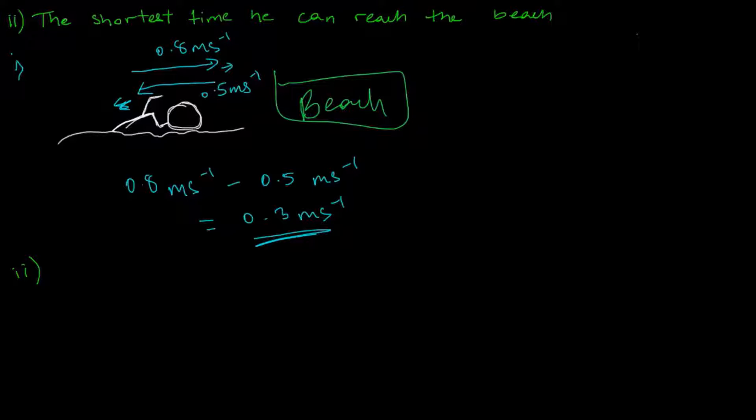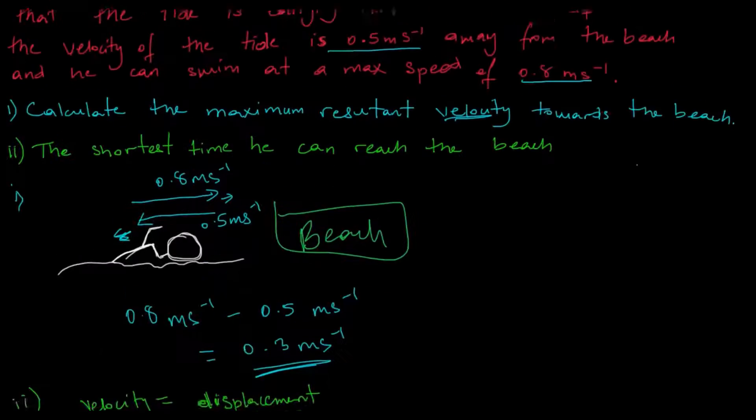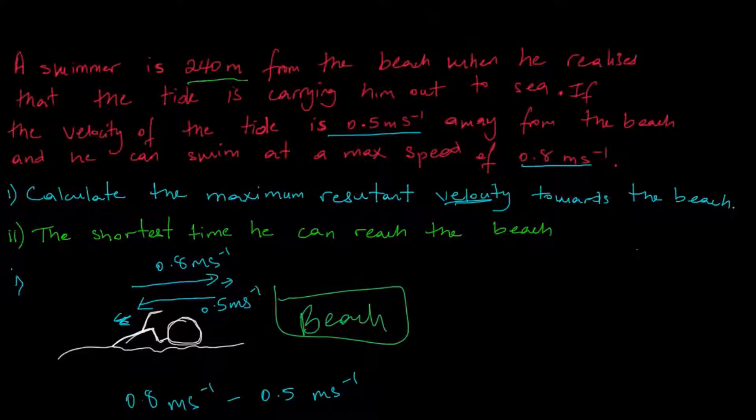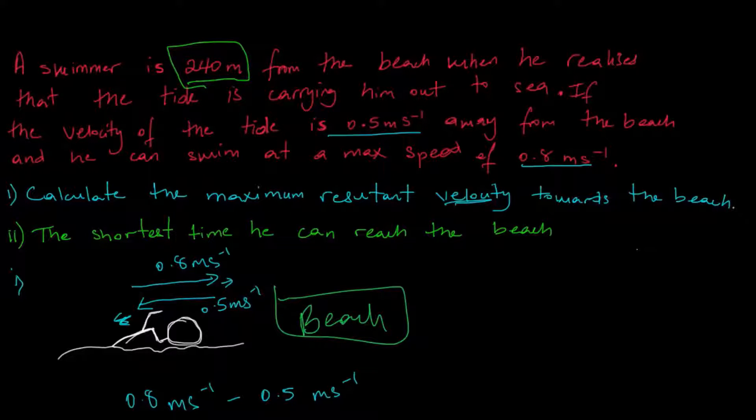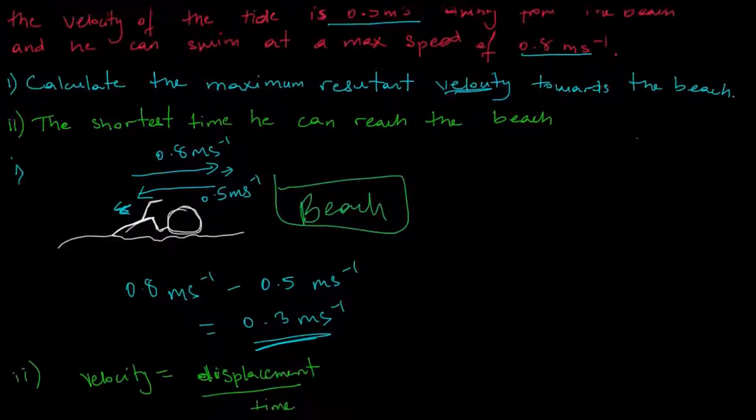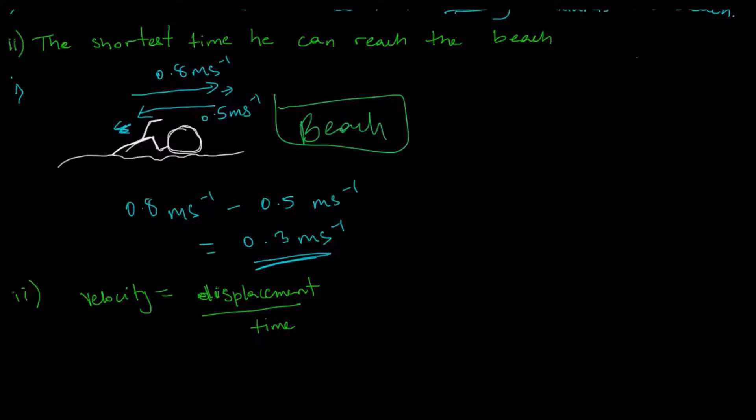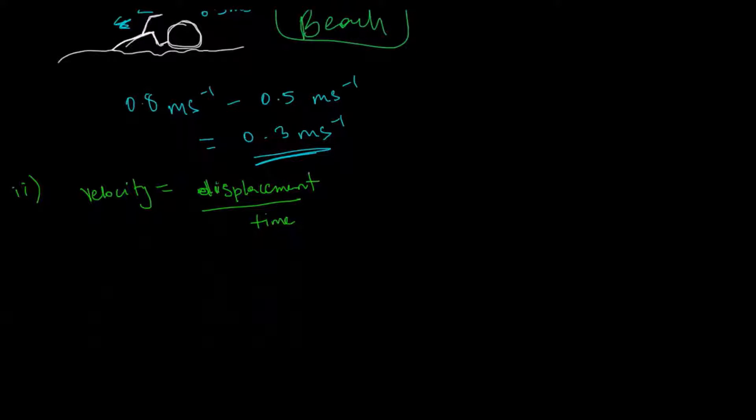So to find the shortest time, we need to use our formula for velocity, which says that velocity is equal to displacement over time. And the question actually tells us that the swimmer is 240 meters away from the beach, and he wants to swim toward the beach. So we want to find the shortest distance in which he can reach the beach. So we are interested in finding out the time. So we want to find the time.